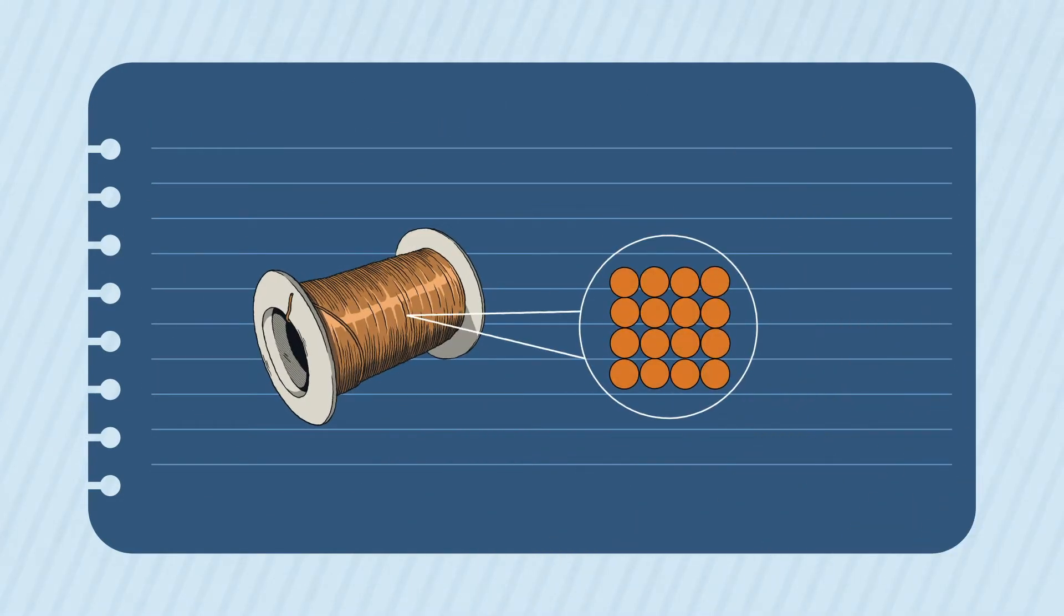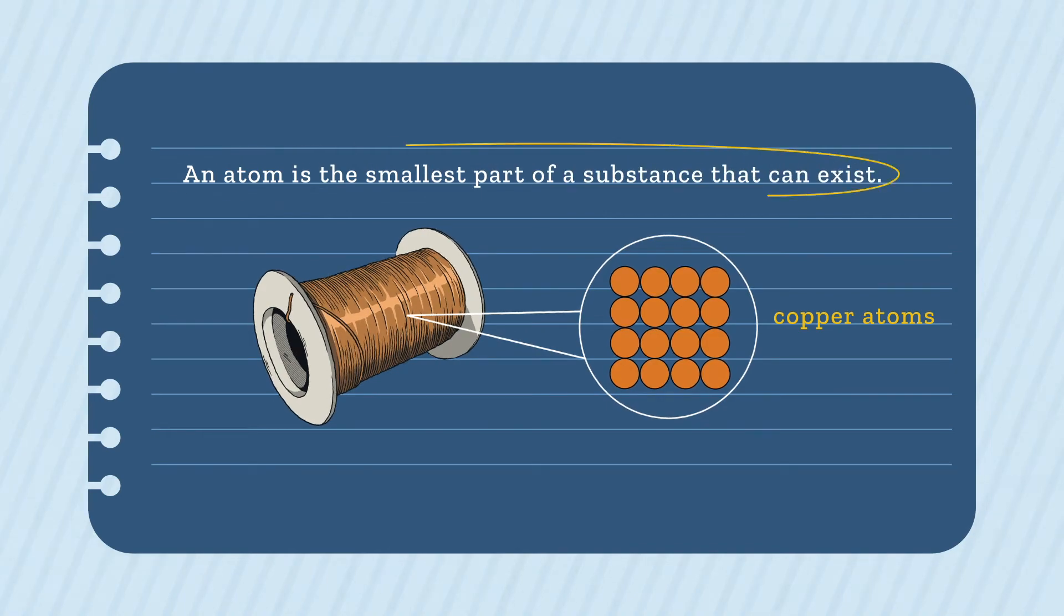All substances are made from atoms. This copper wire, for example, is made of copper atoms. An atom is the smallest part of a substance that can exist.